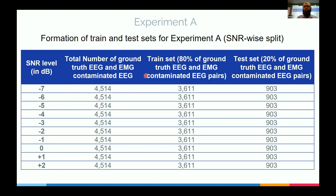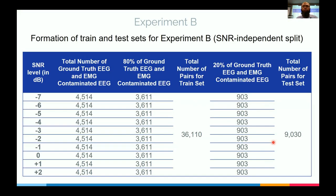In Experiment B, we made the problem more realistic and complicated. Since in the real world we don't know how much a signal will be corrupted, we corrupted EEG at all different SNR levels, mixed all of them together, then took 80% for training and 20% for testing — ensuring each SNR level was represented in both the training and test sets, so the model learns across all SNR levels.